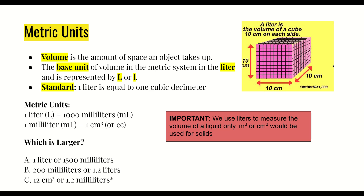Now let's look at our metric units. The base unit for volume is the liter — make sure to write down its symbol. One liter is equal to one cubic decimeter, which is labeled in centimeters because one decimeter equals 10 centimeters. If we do 10 times 10 times 10, that gives us 1,000, and we'll talk about that as one of our calculations for finding volume.